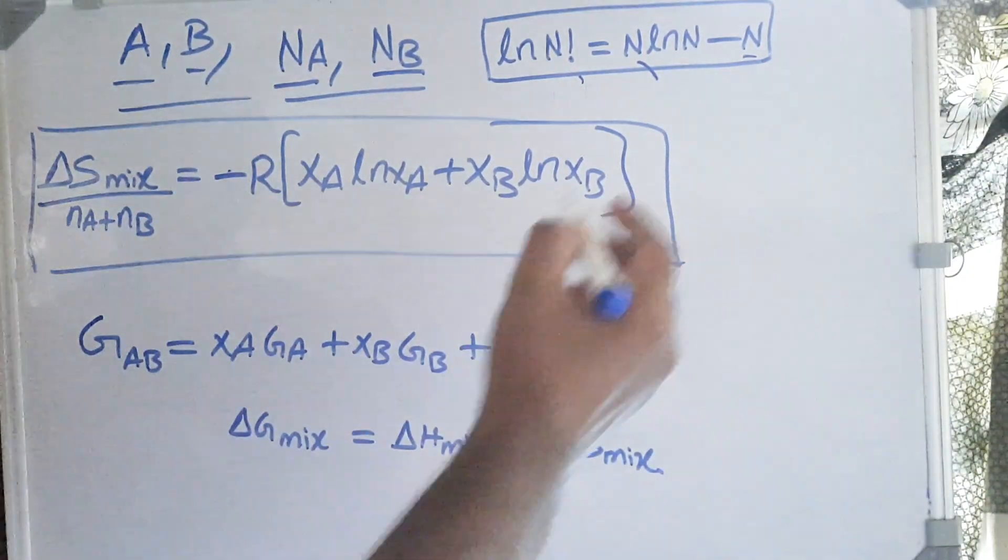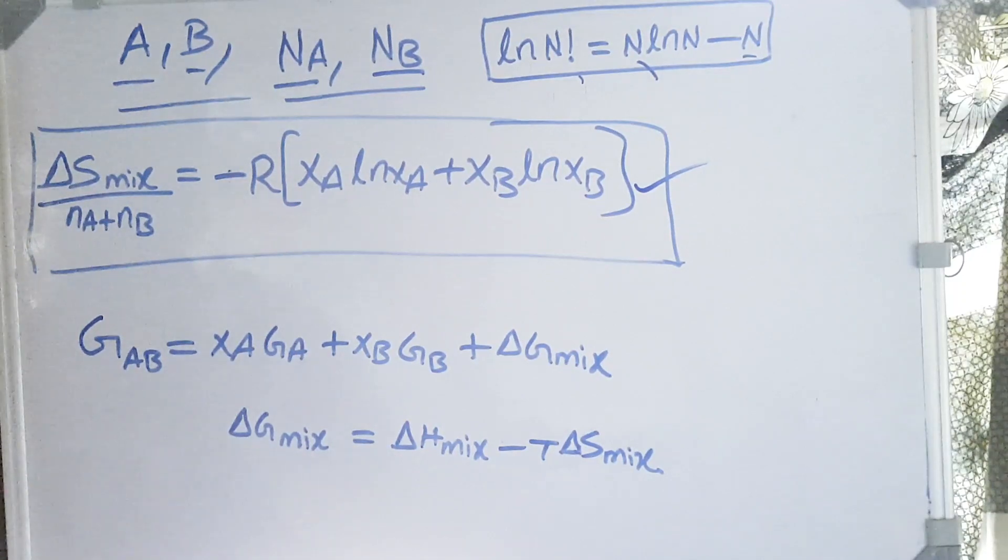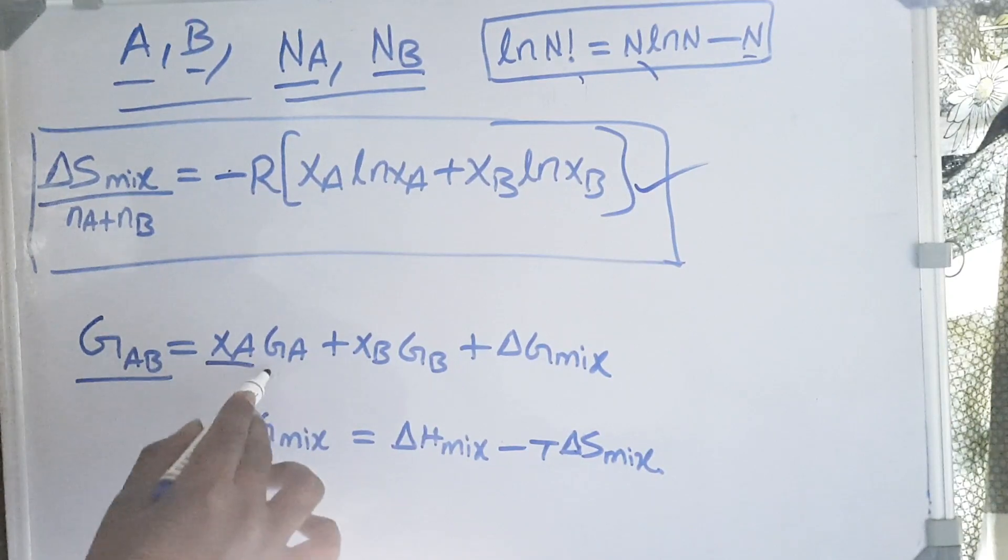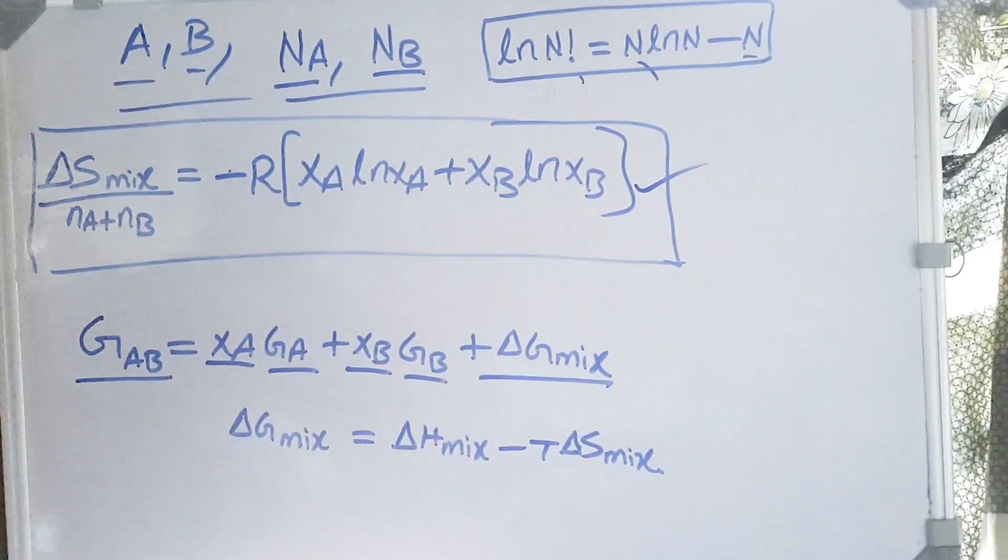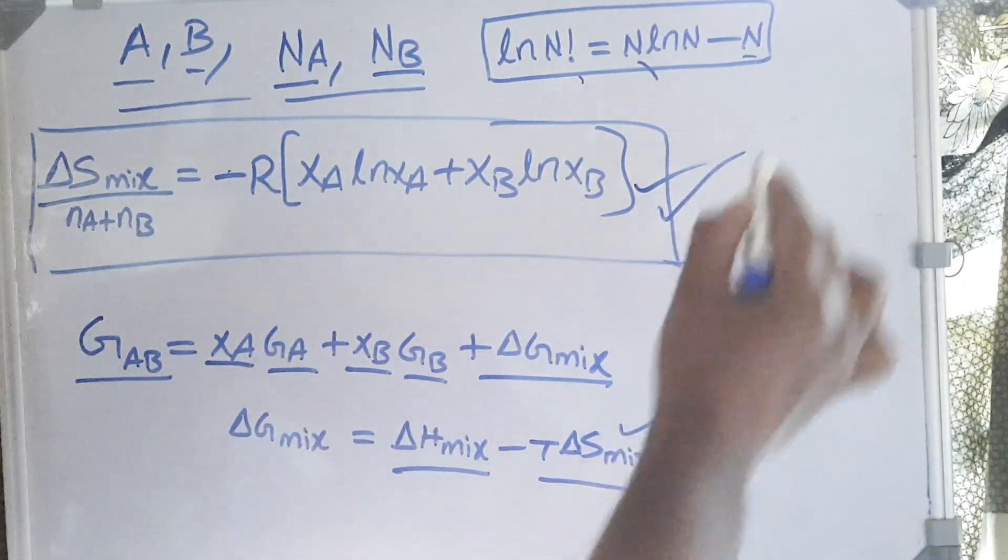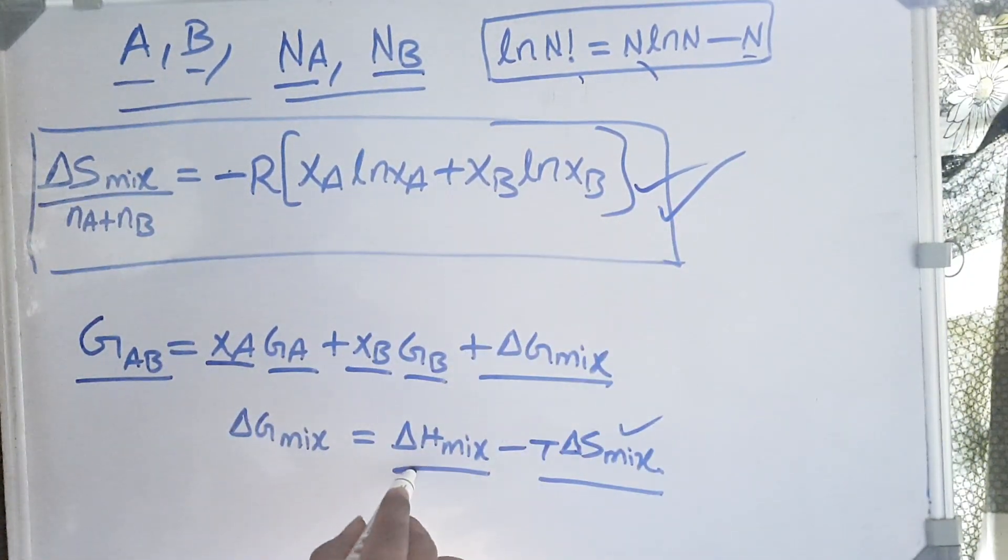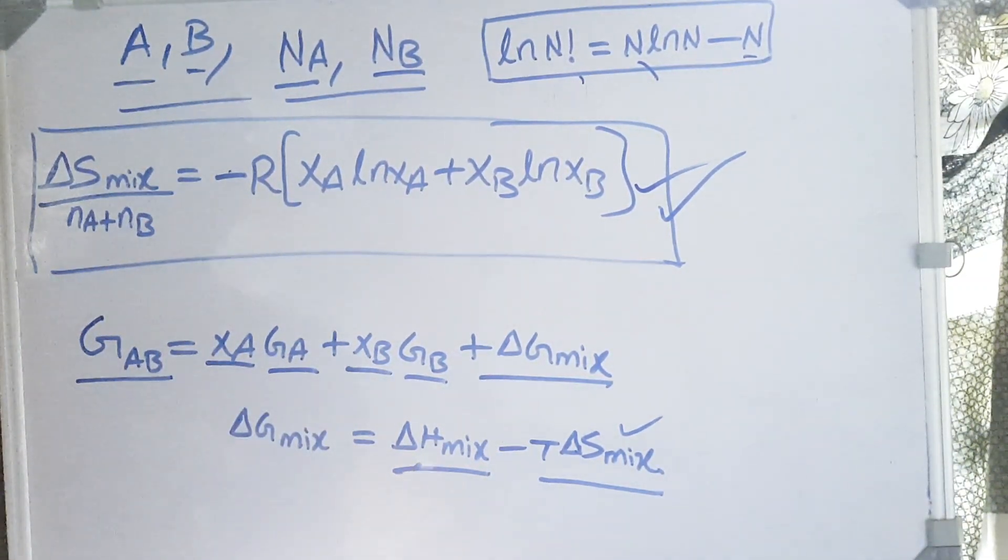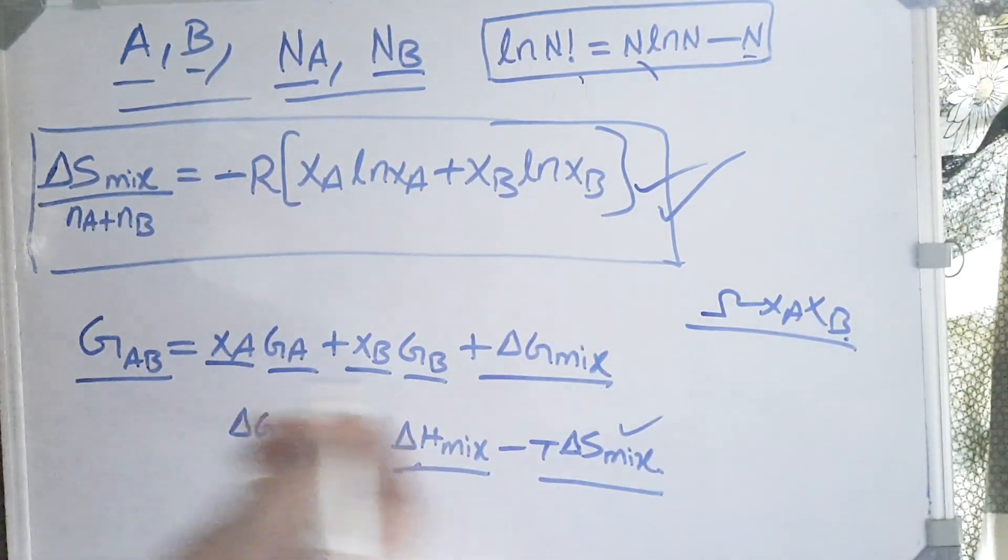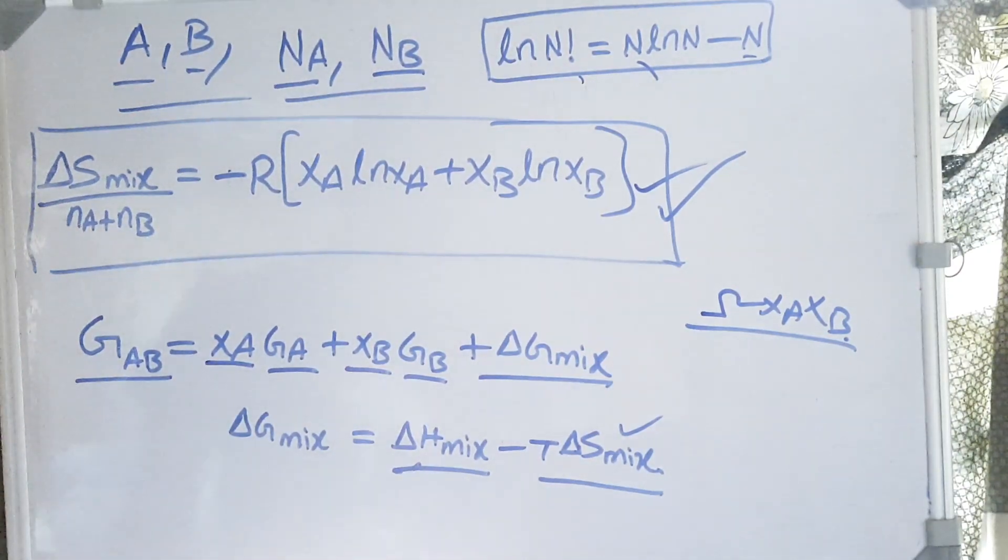Delta S mix for a binary solution is this. Let us look at the free energy: free energy of a binary system is given by XA·GA + XB·GB + delta G mixing. And delta G mixing equals delta H mixing minus T delta S mixing. T delta S mixing is what we calculated - configurational entropy. Delta H mixing depends on the system. If it is ideal, delta H mixing is 0. If we consider regular solution model, delta H mixing becomes omega XA XB, and for sub-regular solution we have XA XB(XA·omega_A + XB·omega_B).